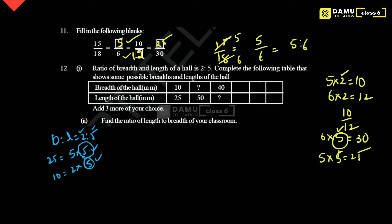Then by which number is length multiplied? Here 5 into 10 we have to do, then we will get 50. So here 10 is there; for that we have to multiply 2 into 10, what we will get 20. So 20 we will get.